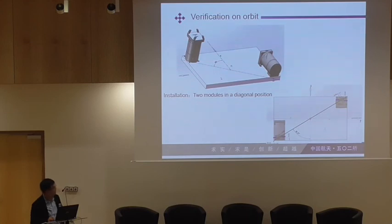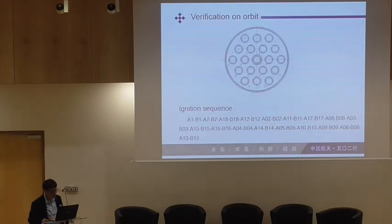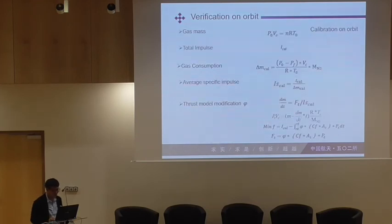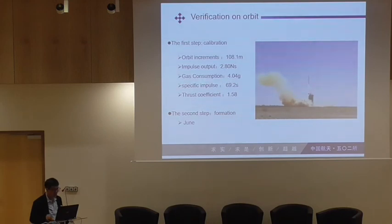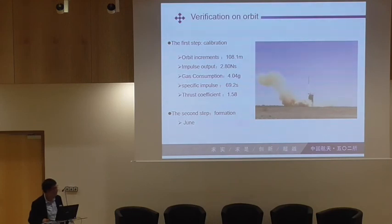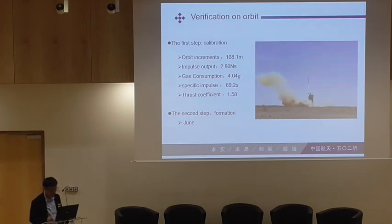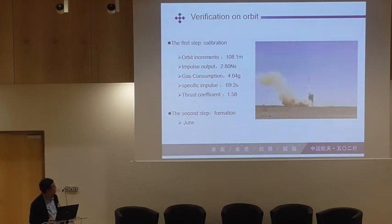Also, the verification of power voltage. This shows the instrument in the diagonal position and the ignition sequence, which is very complex. The first step of the orbital calibration increases the velocity increment of 108.1 m/s. The impulse output is 2.8 Ns. The gas consumption is about 4 grams. The thrust coefficient is 1.58.